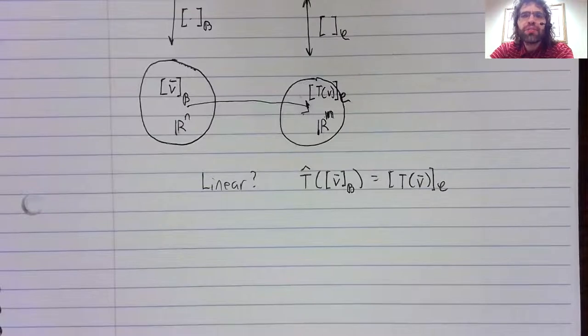Every linear transformation from R^n to R^m has a matrix associated with it, the matrix of the linear transformation.